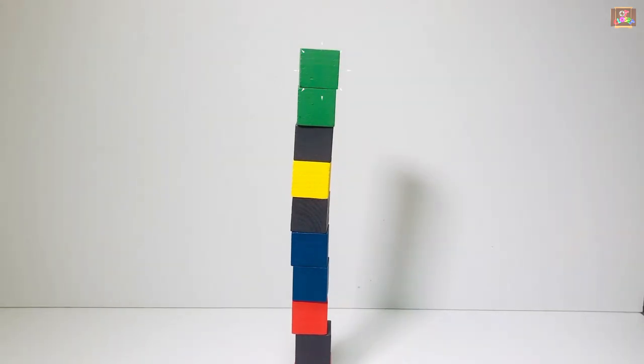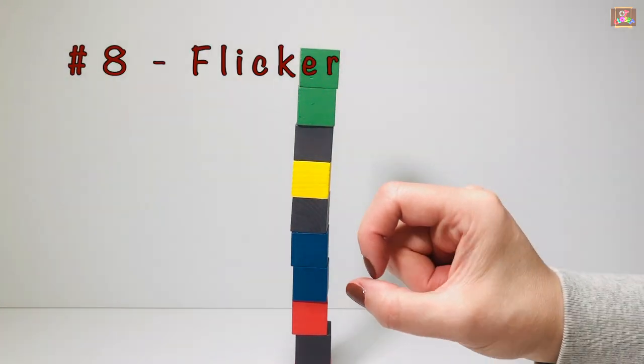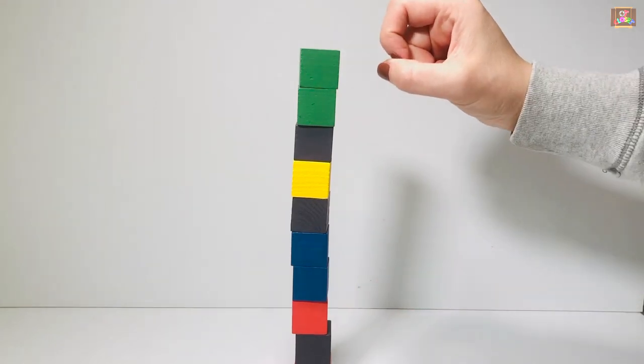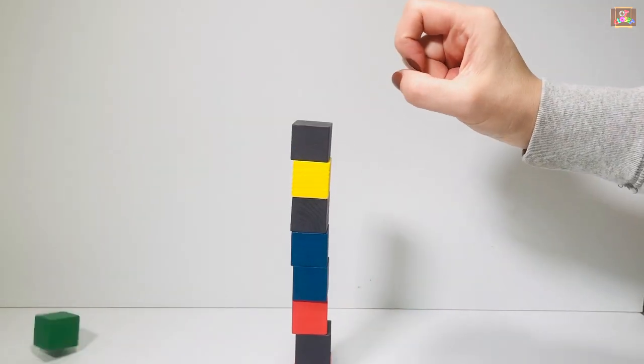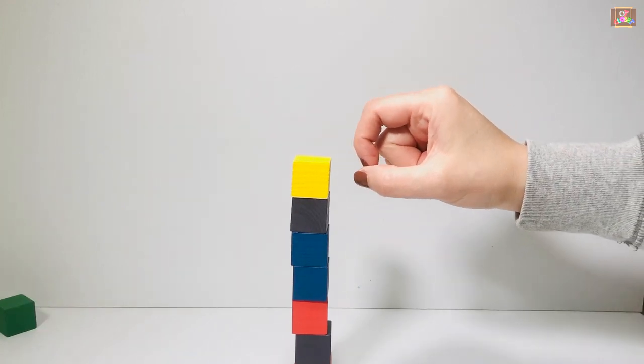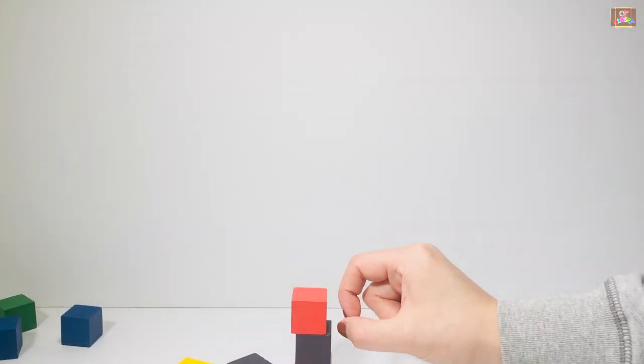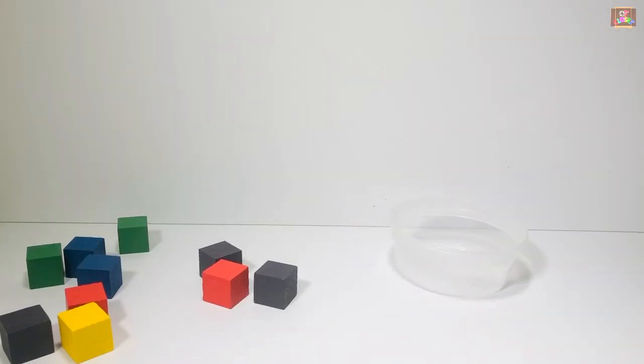...falling. Game number eight: use your thumb and index finger and flicker one block at a time to make it fall. Bye-bye tower.